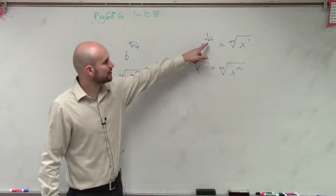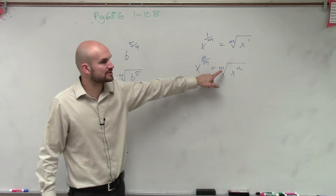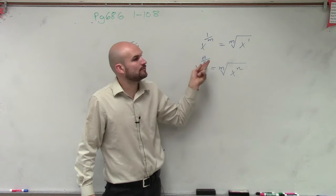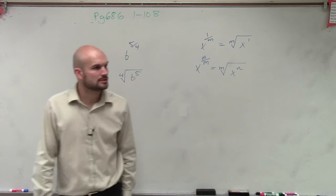Well, it's the same thing. You notice the denominator goes into your roots. Your numerator goes as your exponent. So it's the same rule. Just one has a 1, and one is n over m.